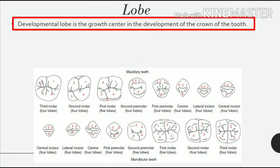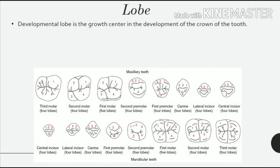Lobe. A developmental lobe is the growth center in the development of the crown of the tooth. Each tooth begins to develop from four or more developmental lobes, and they appear as cusps and mamelons on the tooth surface.